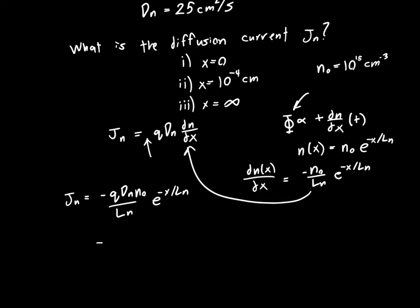So q is 1.6 times 10 to the minus 19 coulombs. Dn we said above was 25 centimeters squared per second. N-naught was 10 to the 15 per centimeter cubed electrons.